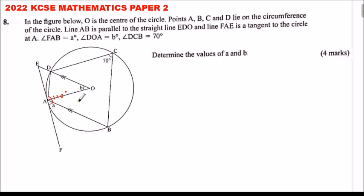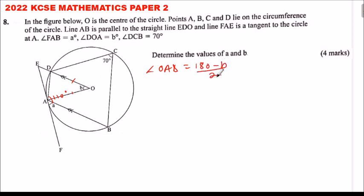Since OA and OD are both radii, triangle OAD is isosceles. Therefore, angle OAD equals angle ODA. So angle OAD equals (180 minus b) divided by 2.